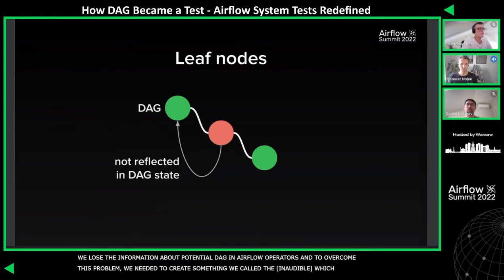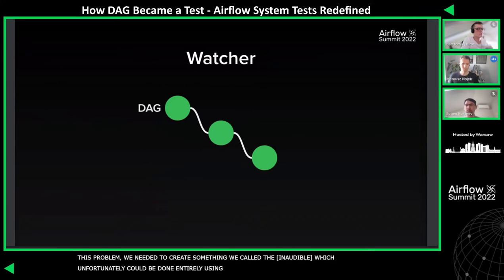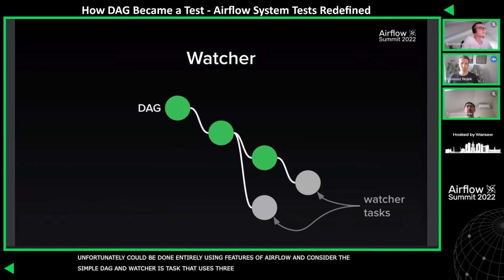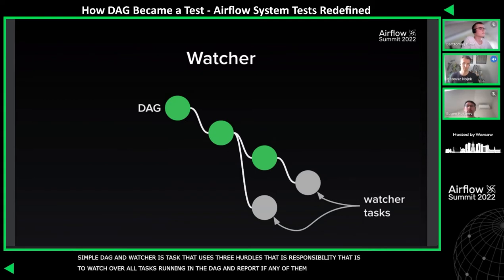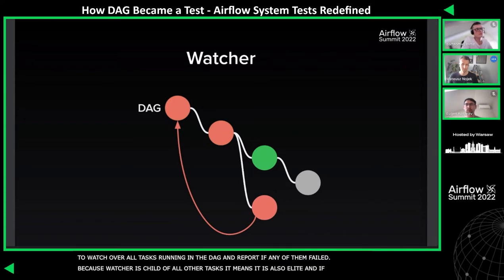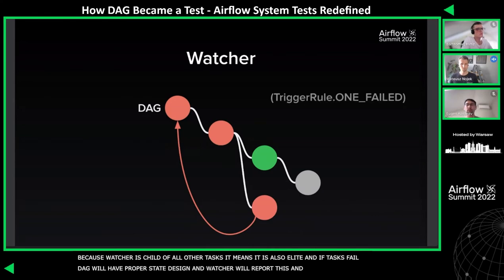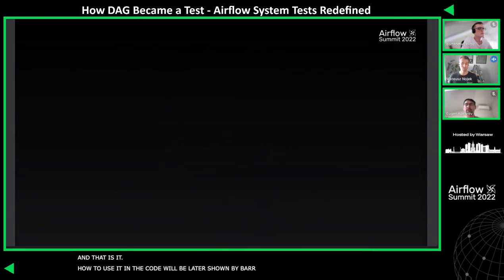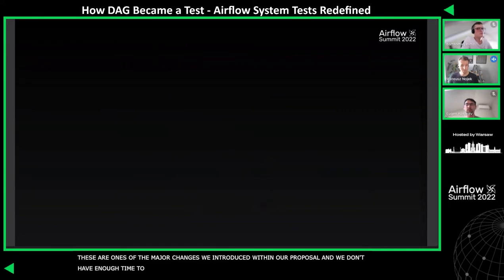To overcome this problem, we created something called the watcher task, done entirely using built-in features of Airflow. The watcher is a task that uses trigger rules and is a child of every other task in the DAG. Its responsibility is to watch over all tasks running in the DAG and report if any of them failed. Because the watcher is the child of all other tasks, it's also a leaf node. If any task fails, the DAG will have the proper state assigned because the watcher will report it, using the trigger rule 'one failed' — which tells the watcher to trigger when at least one upstream task has failed. How to use it in code will be shown later by Bartek.